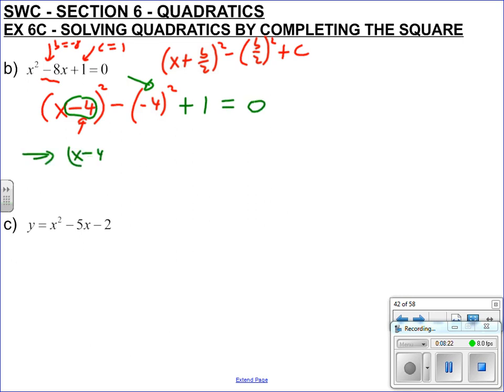So we get x take 4 all squared, subtract, minus 4 all squared so that's 16, so minus 16, notice it is always a minus, plus 1. So x take 4 all squared minus 15 equals 0.